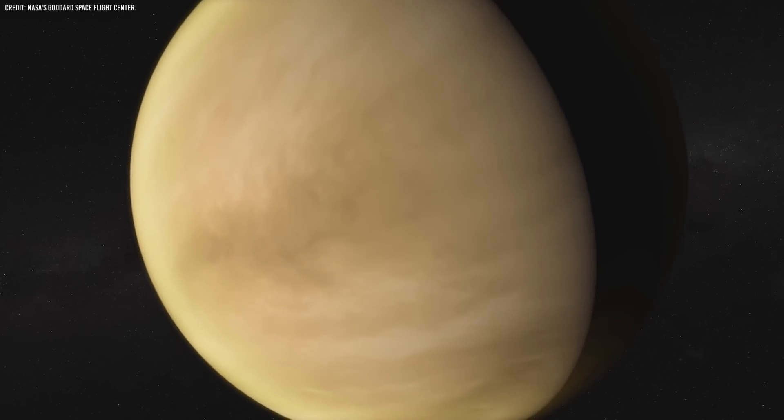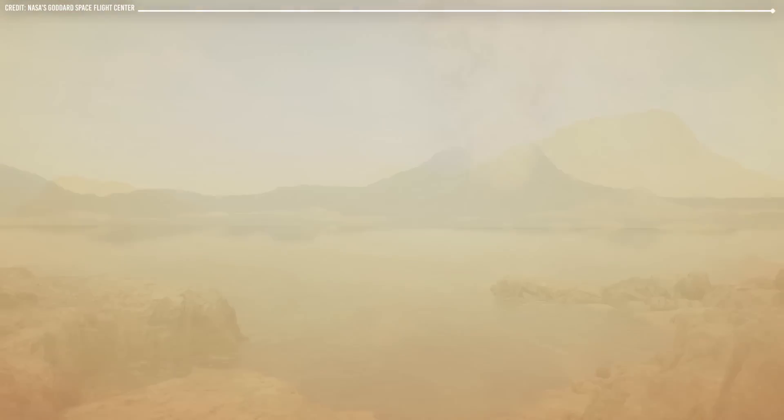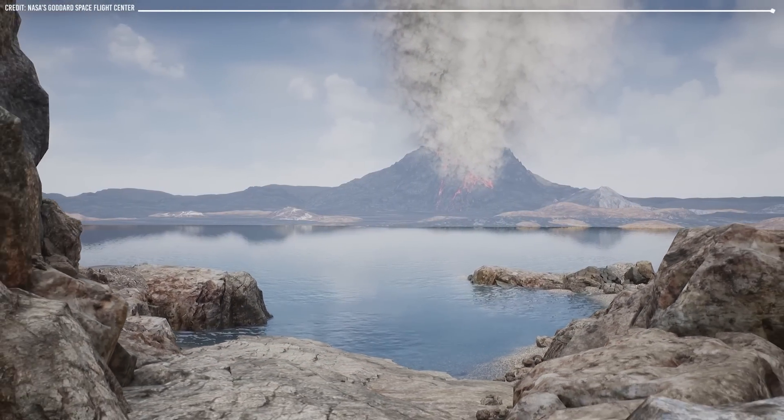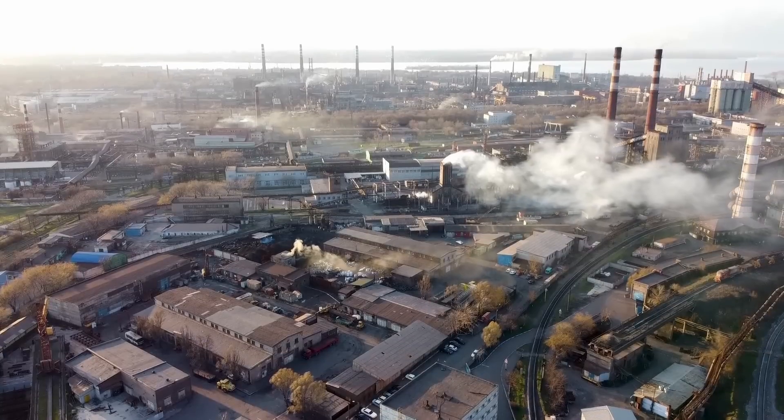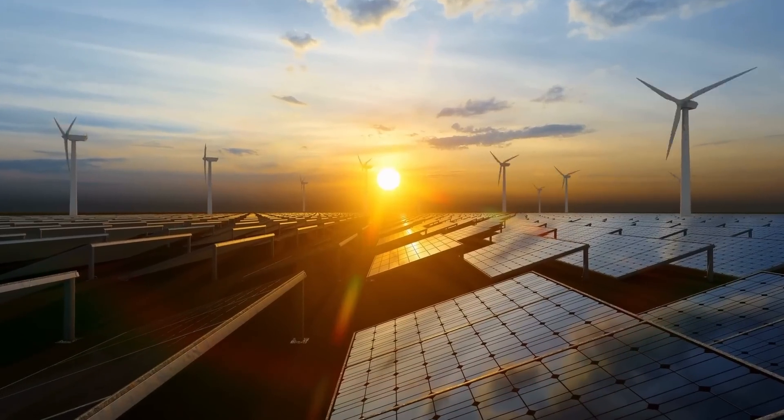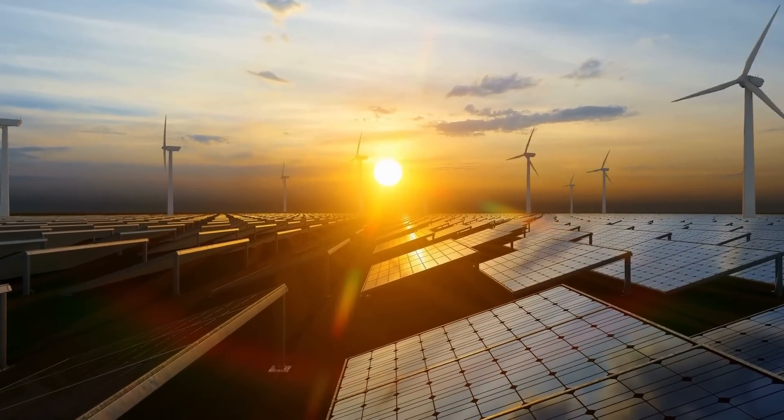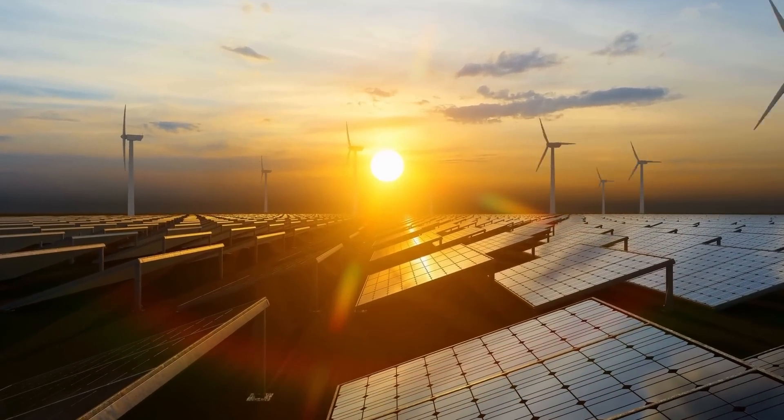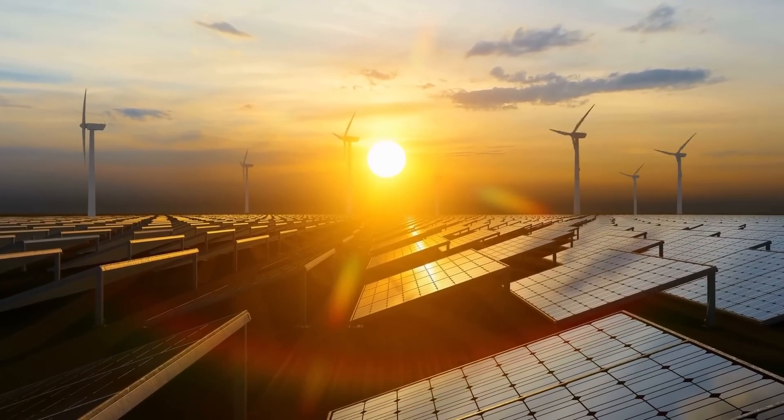The lessons we can learn from Venus are that the greenhouse effect can have severe consequences for a planet's climate and that we need to take action to prevent similar outcomes on Earth. By reducing our greenhouse gas emissions and transitioning to cleaner forms of energy, we can prevent the worst effects of climate change and ensure a more sustainable future for our planet.